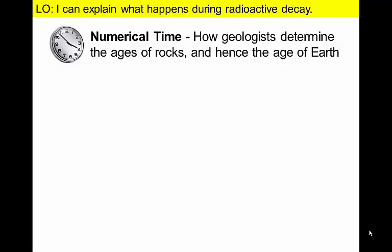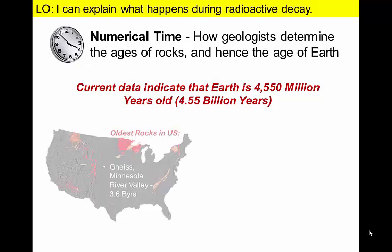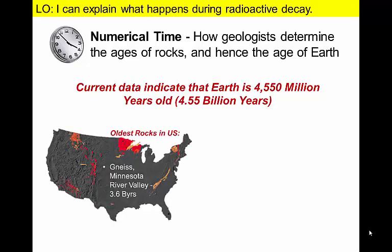Today, we calculate that Earth is 4.55 billion years old. The oldest U.S. rocks are examples of the metamorphic rock gneiss that can be found in parts of Minnesota and Wisconsin. The rocks highlighted here are the oldest in the U.S. and most formed more than a billion years ago.